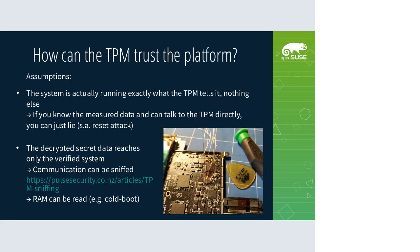This only works if certain assumptions are true. The system really has to be running what the TPM thinks it is — otherwise you can just tell the TPM 'yes, I'm definitely running the bootloader' while running something else. The TPM has to trust what you're telling it. This means if you know what the TPM is being told on a successful measured boot, you can just send those values and it will say okay and perform the decryption. You can also trick the TPM to reset the PCRs again in a running system and start the measured boot from scratch while the system is still actually running.